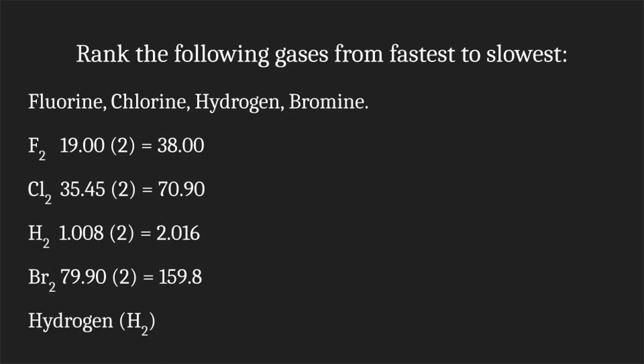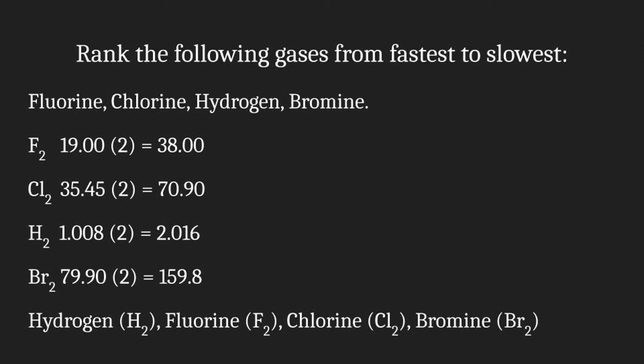The lightest here is hydrogen, since it has the lowest mass. The second lightest is fluorine, then followed by chlorine, then followed by bromine. So in order from fastest to slowest, we have hydrogen, fluorine, chlorine, and bromine.